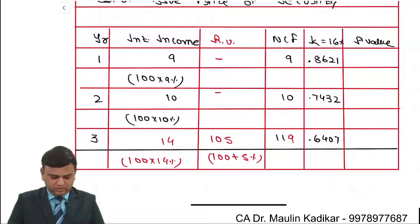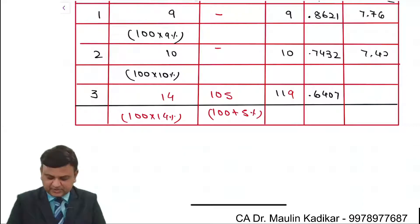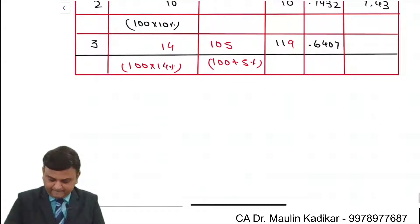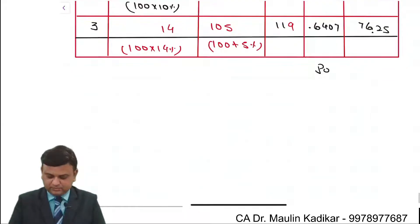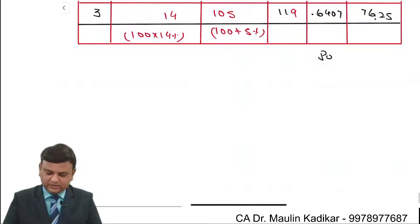So over here 9 into 0.8621 that comes to 7.76. 10 into 0.7432 that is 7 rupees 43 paise. 119 into 0.6407 that comes to 76.25. Total of all of them is P0. 7.76 plus 7.43 plus 76.25 that comes to 91.44.